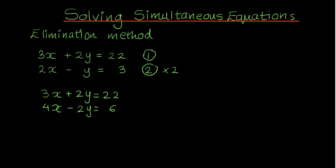Now I need to make a decision: do I add or subtract these two equations in order to eliminate one of the letters? I've decided I want to eliminate y. The coefficients are 2 and minus 2 — their absolute values are both 2. If the signs of the letter I'm trying to eliminate are different, then I'm going to add the two equations. If their signs are the same, then I'm going to subtract. In this case the signs are different, so I'm going to add.